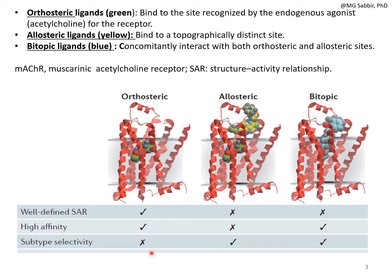Within muscarinic receptors there are five subtypes — M1, M2, M3, M4, and M5 — all of which can bind acetylcholine, so acetylcholine has no subtype selectivity. Allosteric ligands, however, are very much subtype-selective — for example, a particular allosteric ligand can bind to M1 muscarinic receptor but not M2, M3, or M4. Bitopic ligands also exhibit a very high degree of subtype selectivity, which has tremendous application in drug design and therapeutic treatment.